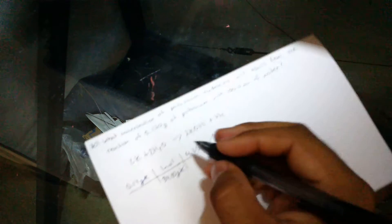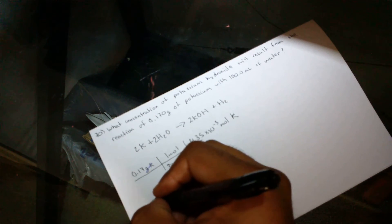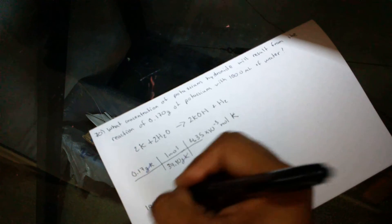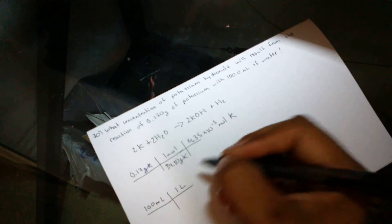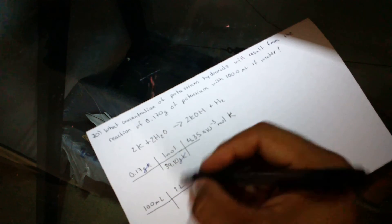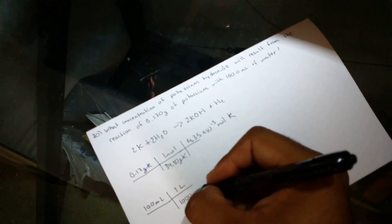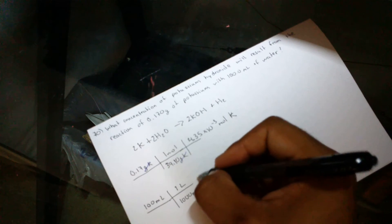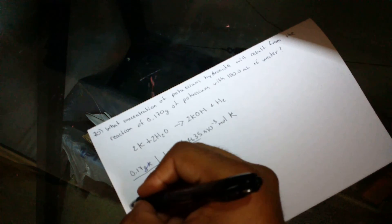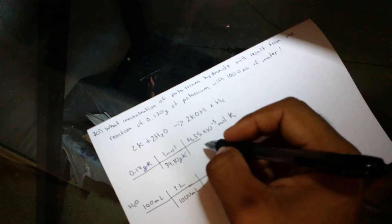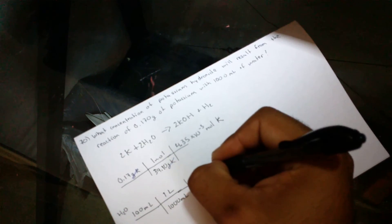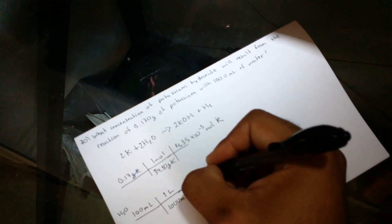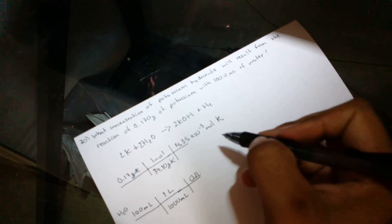We also know that we have 100 milliliters of water. So I'm going to convert that to liters. We know that 1 liter equals 1000 milliliters. That's H2O guys. And we can see that's 0.1 liter.